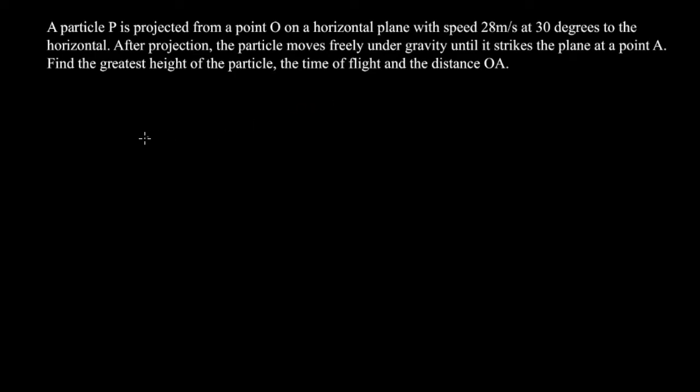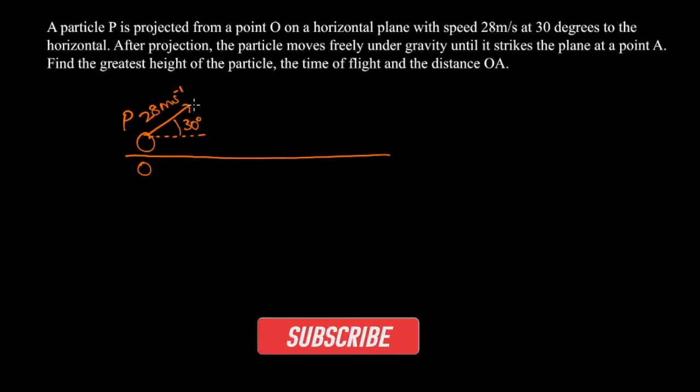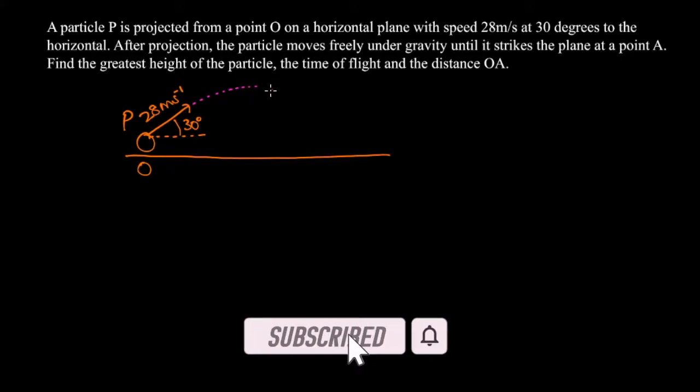So let's begin by drawing a diagram. We have a horizontal plane with a particle P at point O. Initially, the speed of the particle is 28 meters per second angled at 30 degrees to the horizontal. The particle moves freely under gravity, so it's going to follow a parabolic curve. It's going to reach a maximum height and then descend until it strikes the ground at point A.